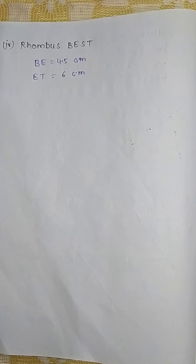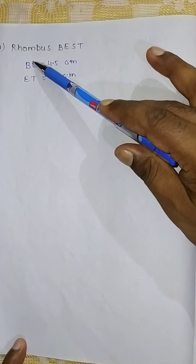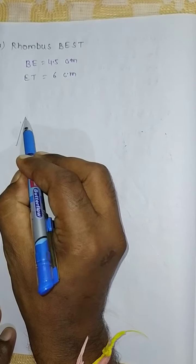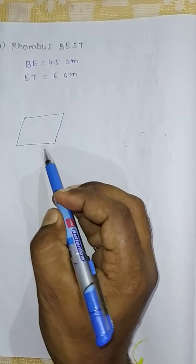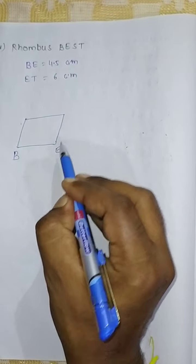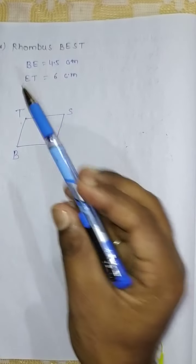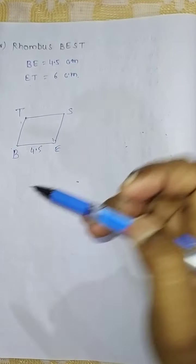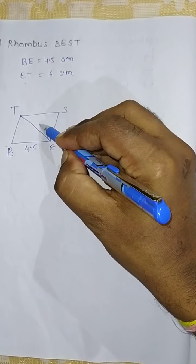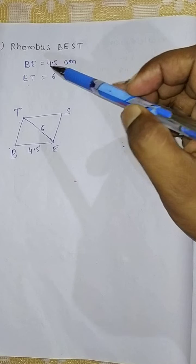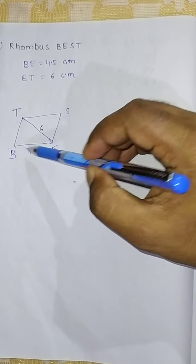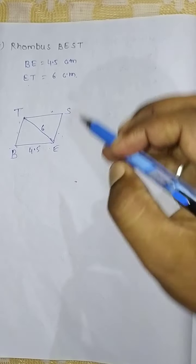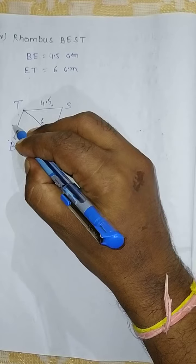The last question of this exercise, Question Number 4: Rhombus BEST with vertices B, E, S, and T. Given: one side equals 4.5 cm and diagonal ET equals 6 cm. By the property of a rhombus, all sides are equal, so all four sides are 4.5 cm.